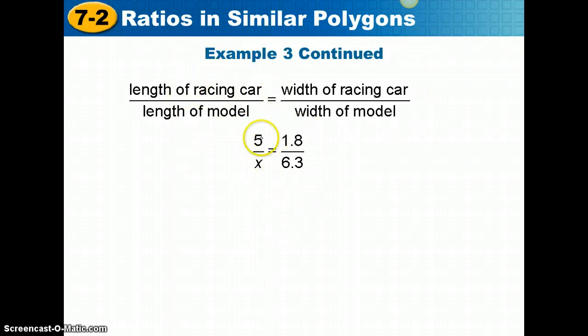If I compare length to length, that's 5 to X. If I compare width to width, that's 1.8 to 6.3. This ratio would be the same as the one we mentioned earlier. The next step is to cross-multiply.